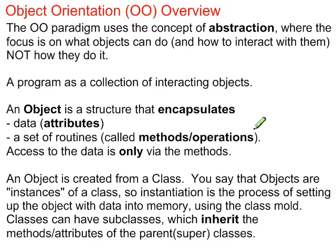One of the major concepts of object-orientated is the concept of abstraction. This is where the focus of objects is what it does and what it can do and hold, rather than actually how it does it. So you're looking at the attributes, which in the object is the data that it holds, and the methods or operations that can occur on those attributes.